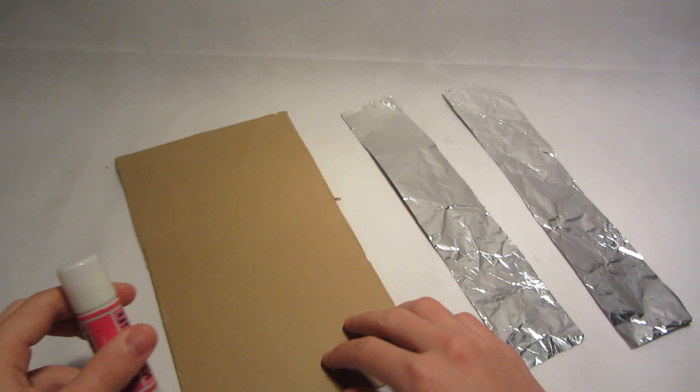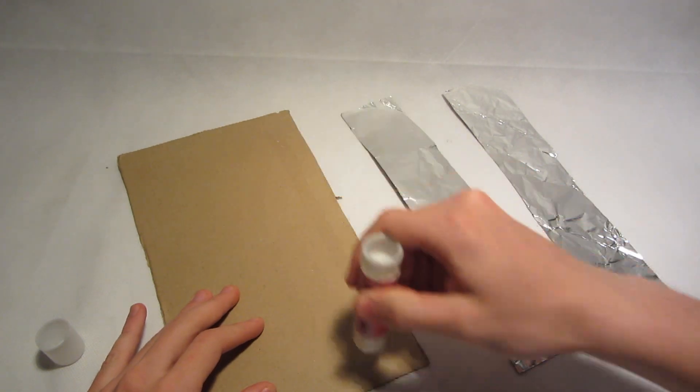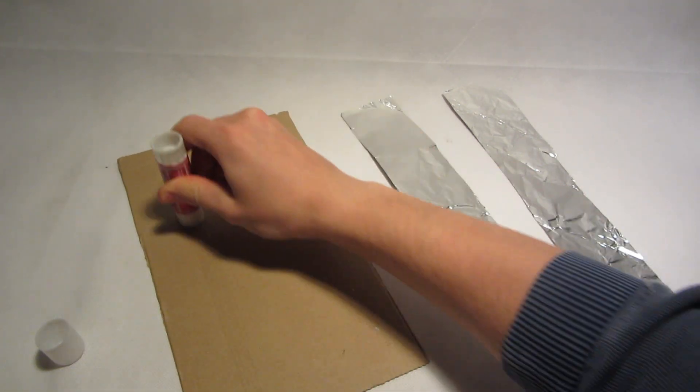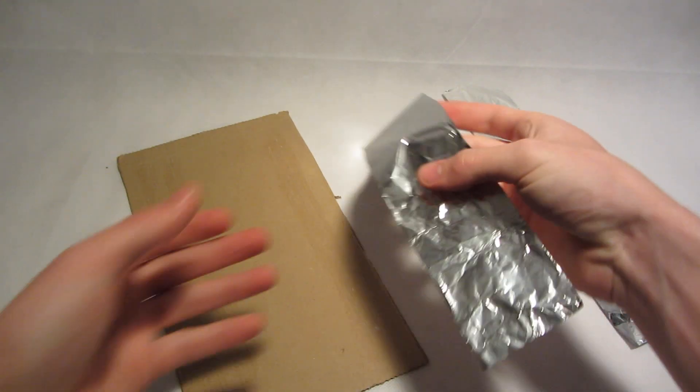Take the cardboard and cover it with glue. Glue the rails into place.